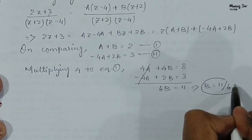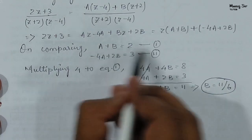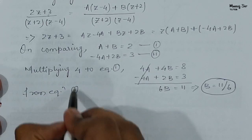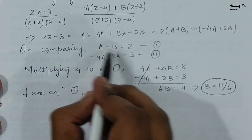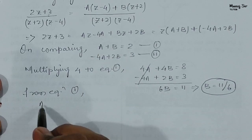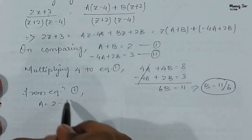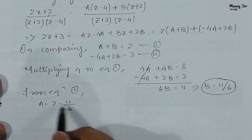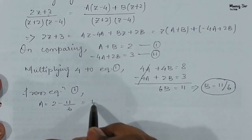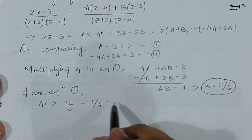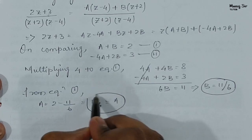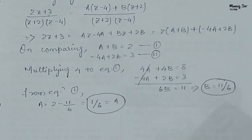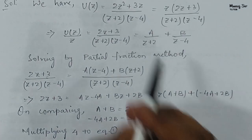So B = 11/6. From equation 1, A = 2 − B = 2 − 11/6 = (12 − 11)/6 = 1/6. So the value of A is 1/6 and B is 11/6. Now we can substitute these values back.